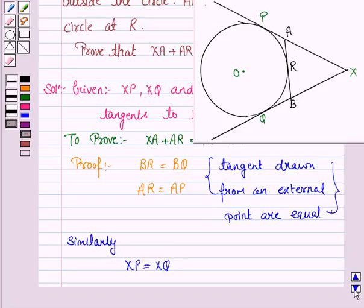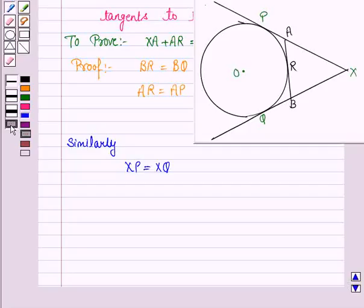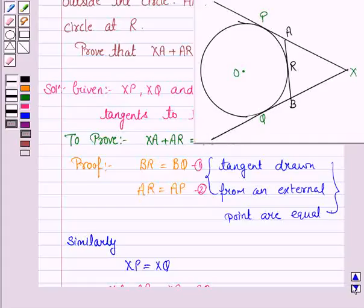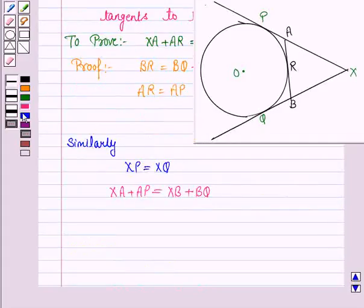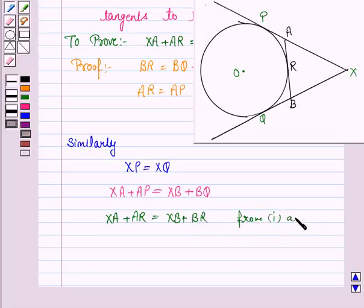So we have XP can be written as XA plus AP, and XQ can be written as XB plus BQ. Now let us name this as equation 1 and this as equation 2. Now AP is equal to AR, so we have XA plus AR is equal to XB plus BQ. BQ is same as BR. This is from equations 1 and 2. So we have proved that XA plus AR is equal to XB plus BR.